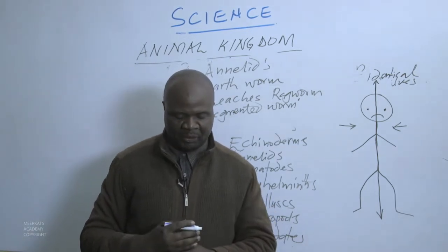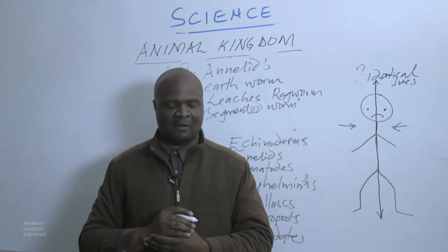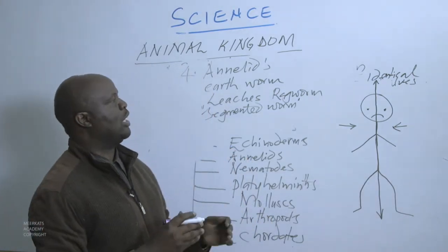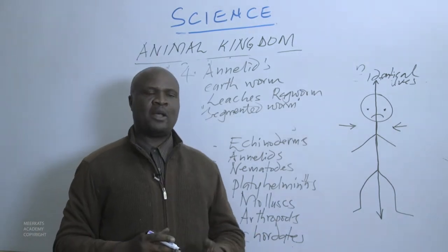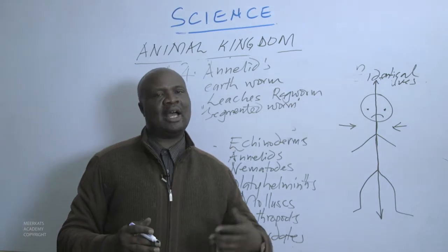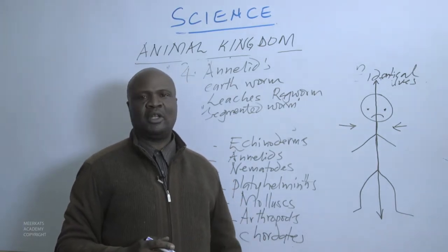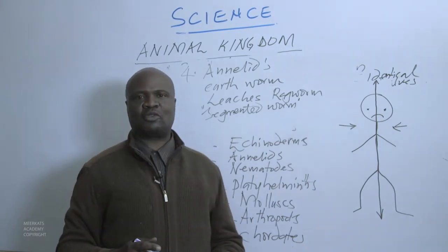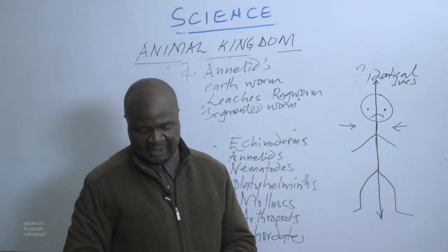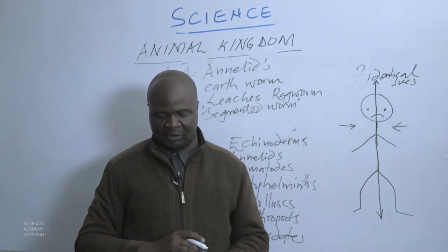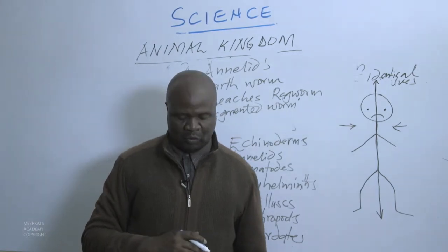The animals within the phylum of Annelids are called segmented worms because of the ring-like structures seen within the body length. These animals have bilateral symmetry — if you want to divide them into equal halves that are identical, you can only divide them once. They cannot qualify under radial symmetry.